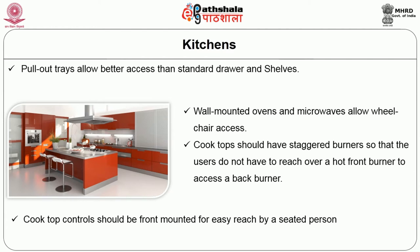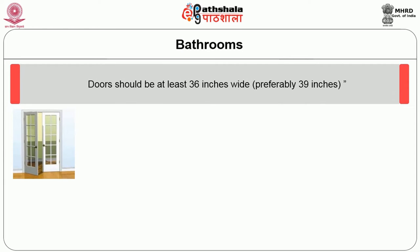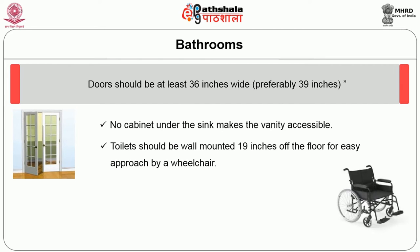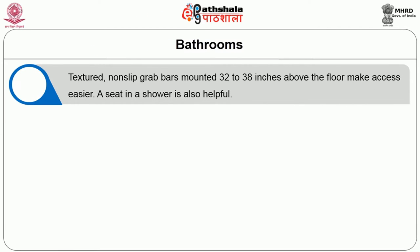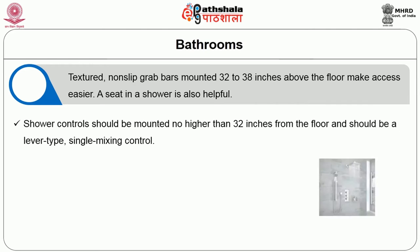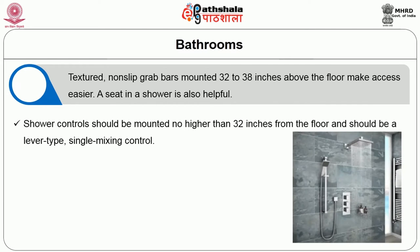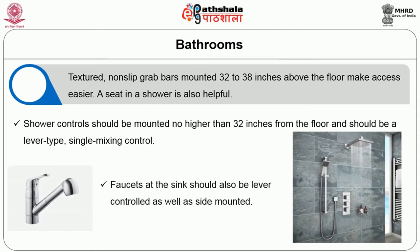Bathroom requirements: Doors should be at least 36 inches wide; preferably 39 inches is better. No cabinet under the sink makes the vanity accessible. Toilets should be wall-mounted at 19 inches off the floor for easy approach of a wheelchair. Grab bars must be anchored in wood so that they will support at least 100 kg. Textured non-slip grab bars mounted 32 to 38 inches above the floor make access easier. A seat in a shower is also helpful. Shower controls should be mounted no higher than 32 inches from the floor and should be a lever-type single mixing control. Faucets at the sink should also be lever-controlled and side-mounted.